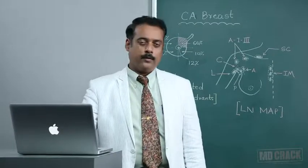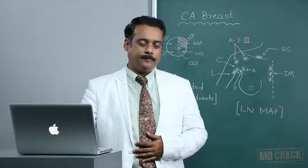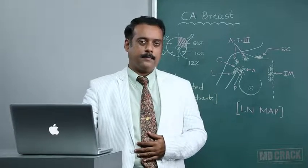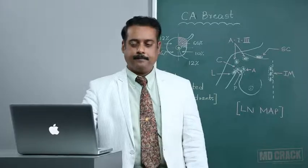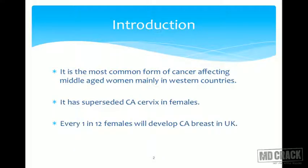Welcome students. We are going to look at a very important topic from an amoebius point of view — malignancy affecting the breast, that is cancer. To introduce it, it is the most common form of cancer affecting middle-aged women, mainly in western countries, but the incidence is also increasing in India. It has now superseded CA cervix. Initially CA cervix was number one cancer affecting females, but now CA breast has taken over. In the UK, 1 in every 12 females is affected with this notorious disease.